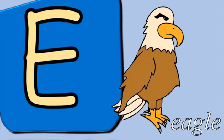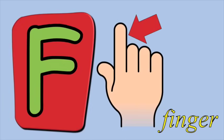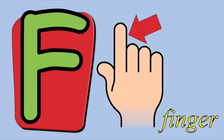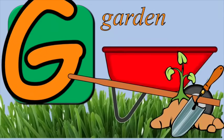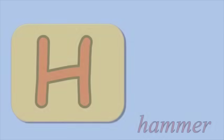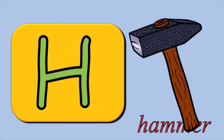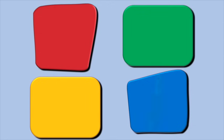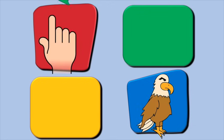E is for eagle, e, eagle. F is for finger, f, finger. G is for garden, g, garden. H is for hammer, h, hammer. These are the words from the alphabets.